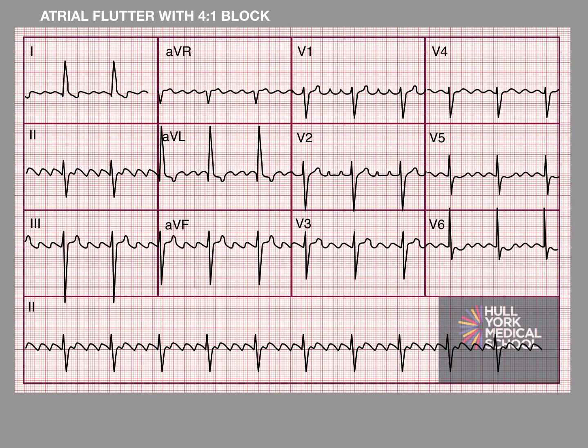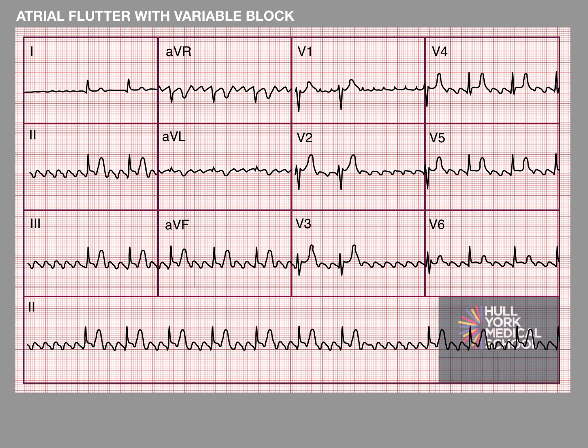Here is an example of atrial flutter with four-to-one block. Again, the block is consistent so you've got a regular rhythm. However, you can get instances where patients get a variable block with their atrial flutter, and in these instances you will get an irregular rhythm.